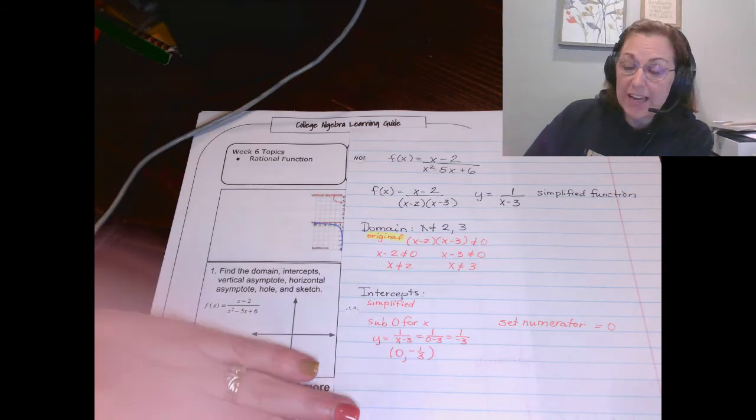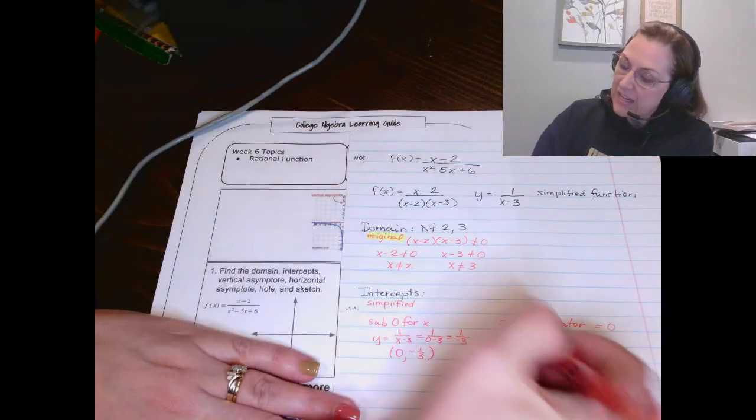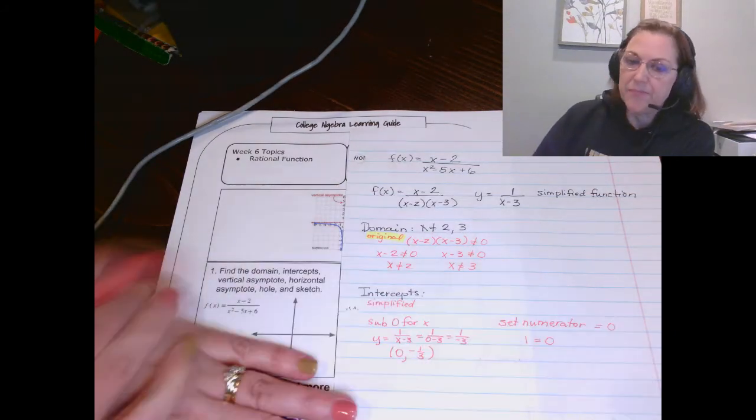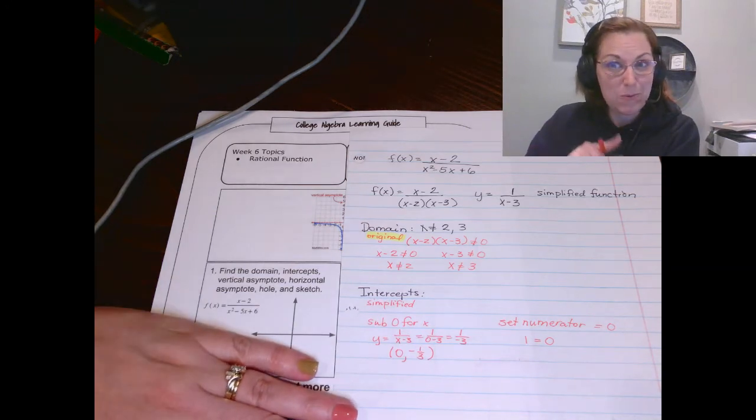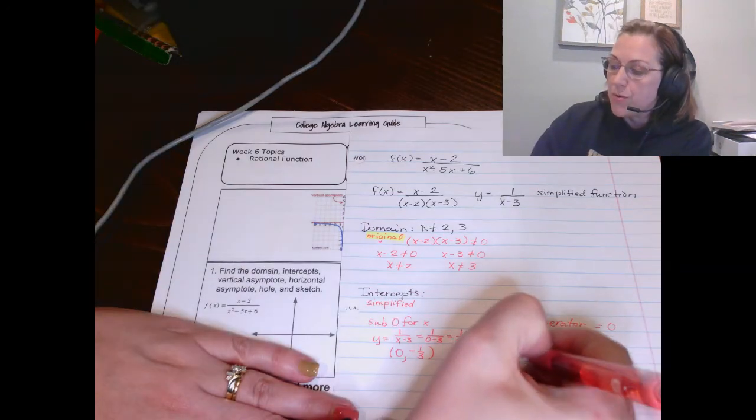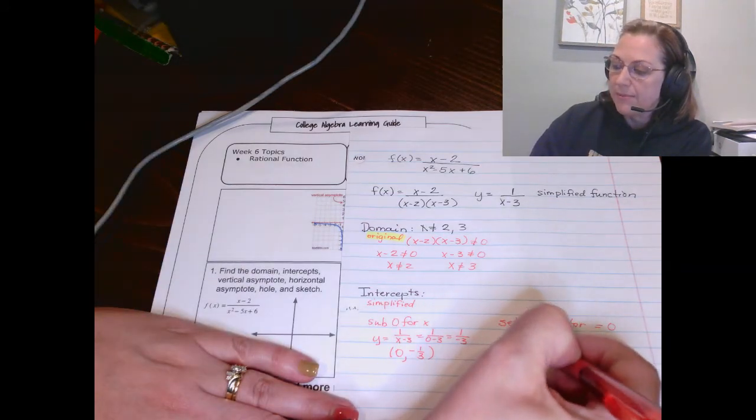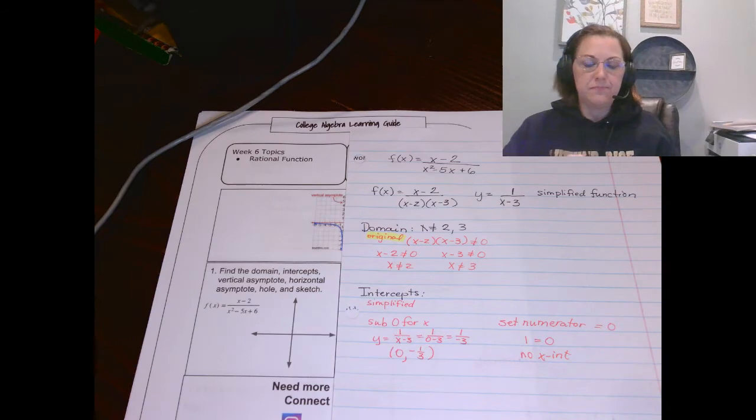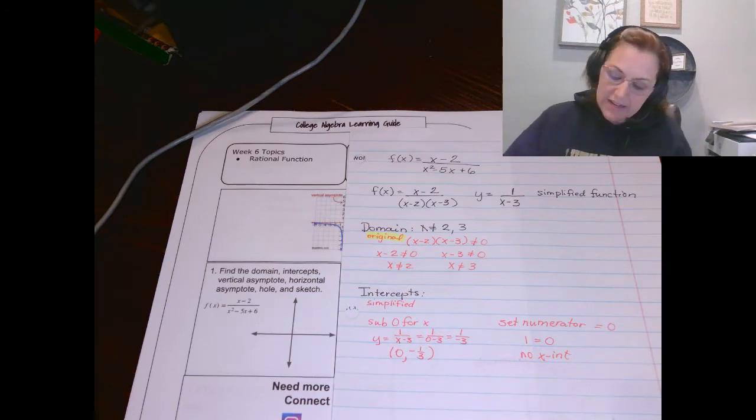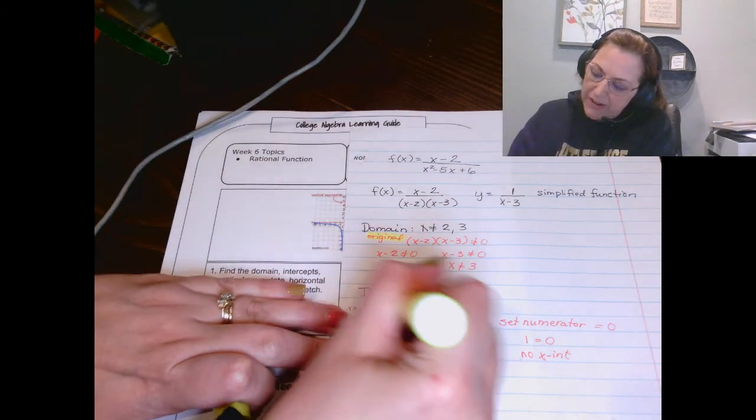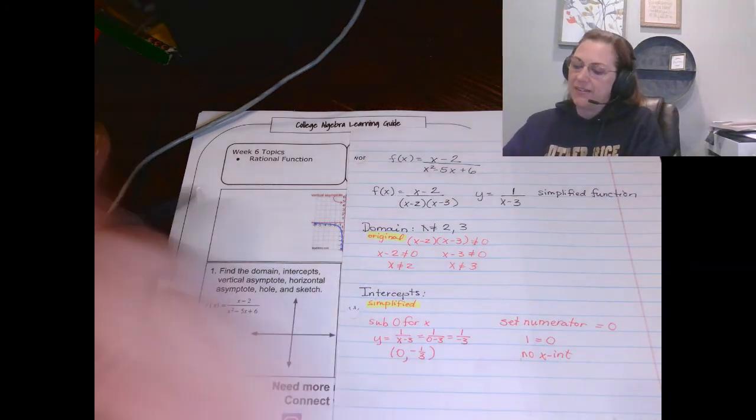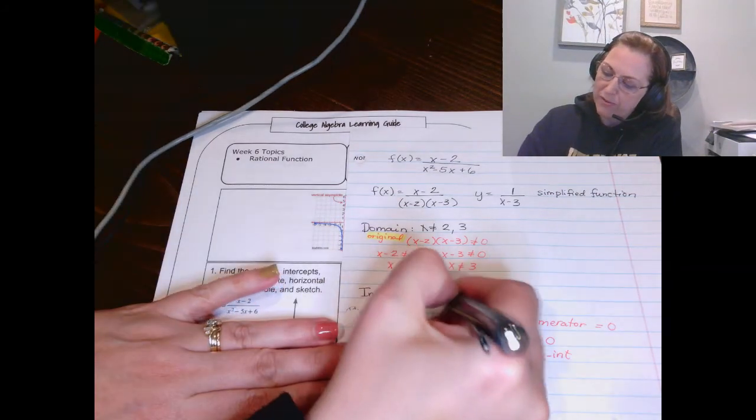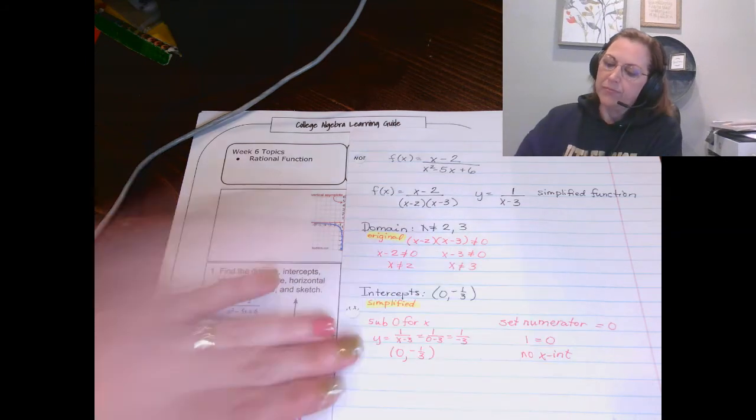So you're going to take your numerator, set it equal to 0, and this is not true, right? 1 equals 0 is not true. That means there's no x-intercept. But again, that comes from the simplified function. So the only intercept we have is at 0, negative 1 third.